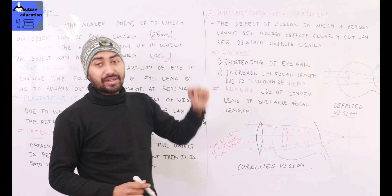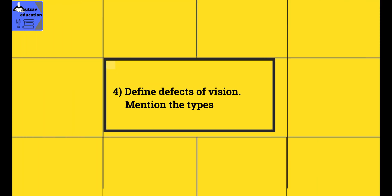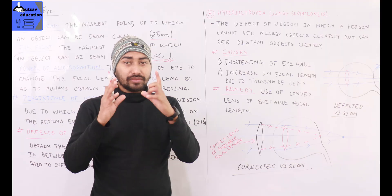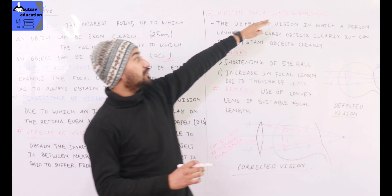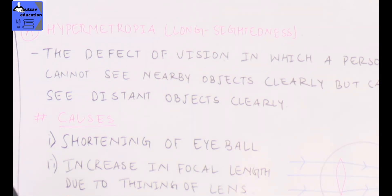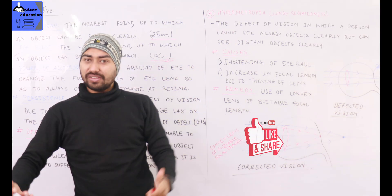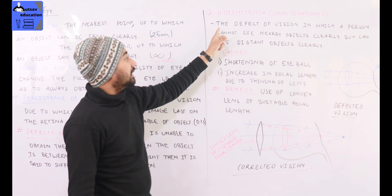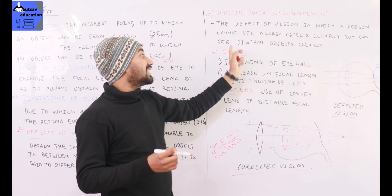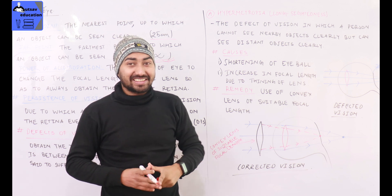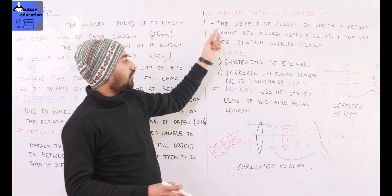The first defect is hypermetropia, also called long-sightedness. Long-sightedness means the defect of vision in which a person cannot see nearby objects clearly, but can see distant objects clearly. This defect of vision is called hypermetropia or long-sightedness.